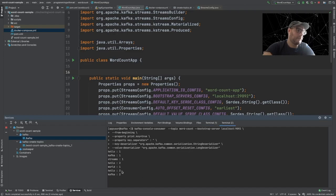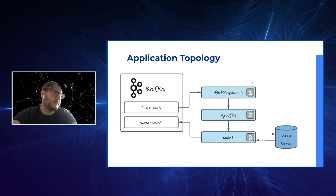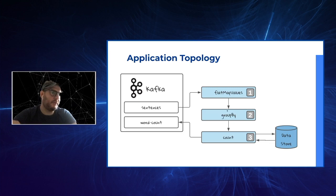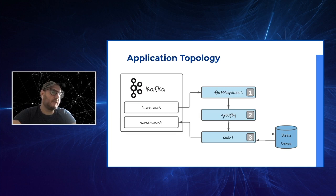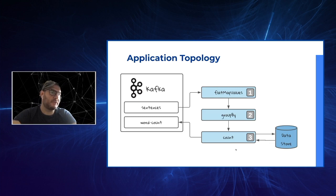You might be wondering how does it work. Let's go back to our topology. First, we divided our sentences into individual words using the flatMapValues operation. After that, we grouped our words by the very same word — in this operation, our word actually became the key for our messages. This is something we'll have to keep in mind, because it will trigger something called a repartition in Kafka Streams, which we will discuss later. Finally, we added the count operation, which is a stateful operation because it actually saves the state — in order to count, we store the current amount of words we have already processed in a data store.